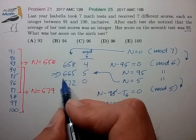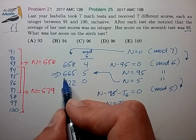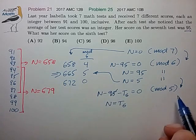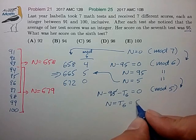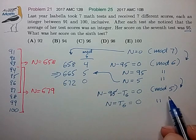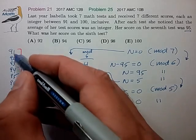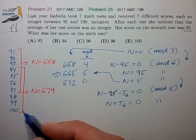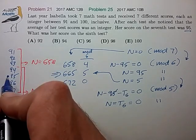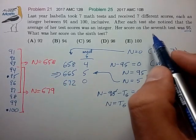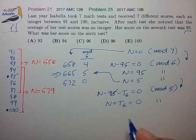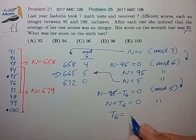But we know that n is equal to 665 and 665 is just equal to zero in mod five. So then we know that t6 is equal to 0 in mod five. So in mod five, the only available choices for test scores that are equal to 0 in mod five is 95 and 100. Now 95 was already taken because that was the score of the seventh test. So the only available choice that's left is for t6 to equal 100.